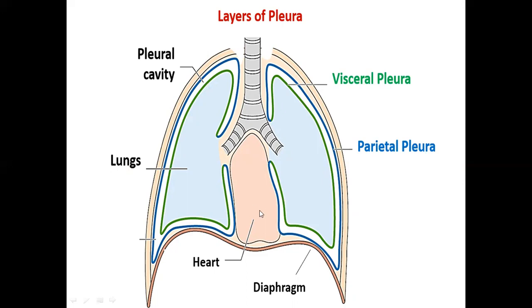Now for the important layers of the lungs, which are called the pleura. We have two pleural layers. The internal layer of the lungs is called the visceral pleura, and the outer layer of the lungs is called the parietal pleura. Between these two layers there is a space called the pleural cavity. The visceral pleura, parietal pleura, and pleural cavity are all very important for the lungs.